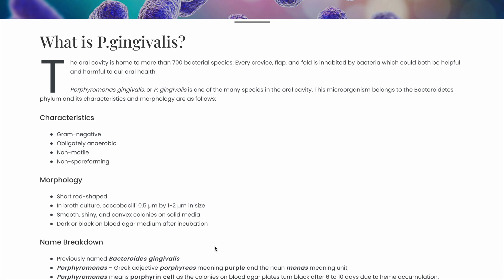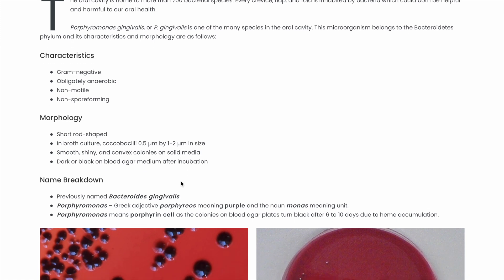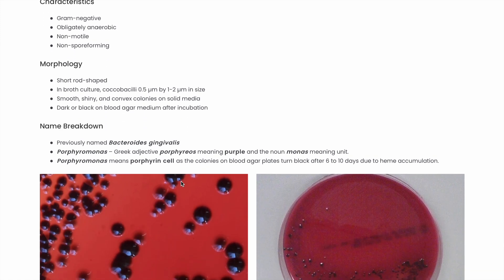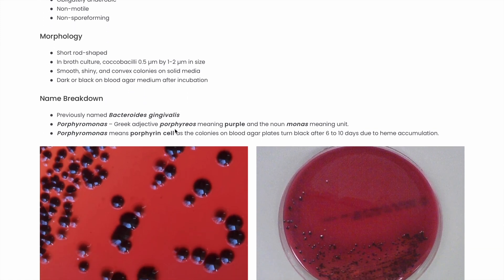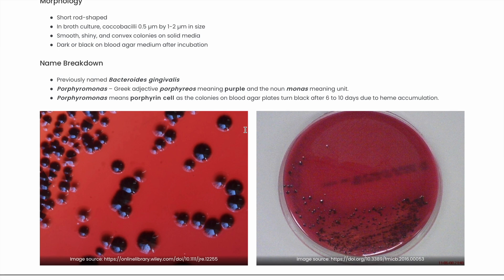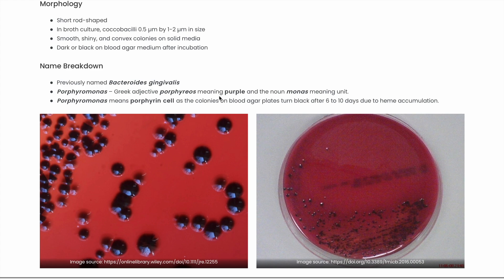It belongs to the Bacteroidetes phylum, and it got its name from a Greek adjective 'porphyrios' meaning purple, and the noun 'monas' meaning unit. It is one of more than 700 bacterial species inside the oral cavity.